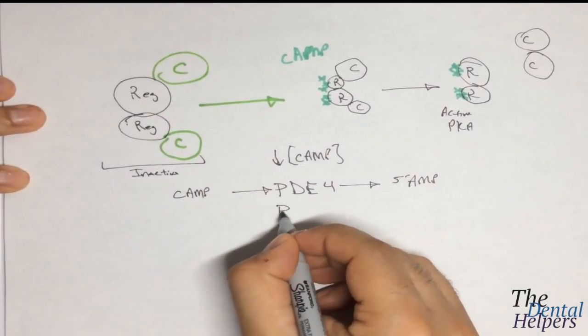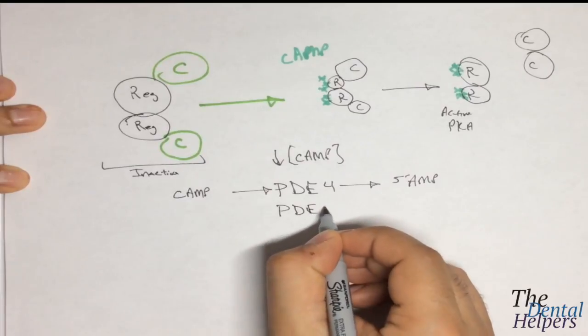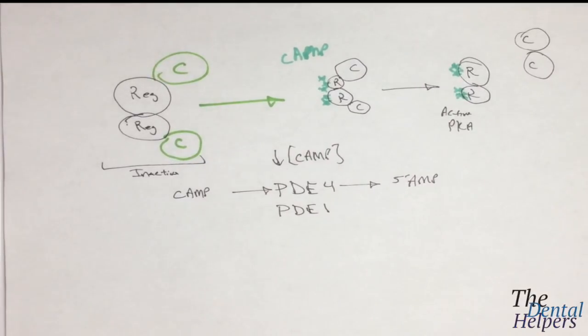This could also be achieved through phosphodiesterase 1. So you can use either route to get to the same product.